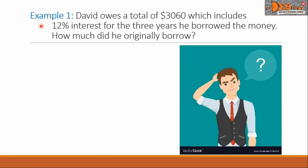Let's have this example one. David owes a total of $3,060, which includes 12% interest for the three years he borrowed the money. How much did he originally borrow?